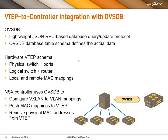You have database schemas that define what should be in individual database tables. The schema we are interested in today is the hardware VTAP schema, which defines a number of tables that define the physical switch, the ports, the logical switch, router, and MAC mappings. Through this schema, if a top-of-rack switch supports it, an NSX controller or Nuage VSP controller can configure the mappings of VXLAN to VLAN. It can push the MAC addresses of the VMs to the VTAP and receive the physical MAC addresses that the VTAP has learned from the outside world.